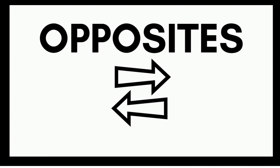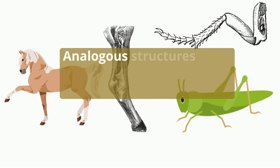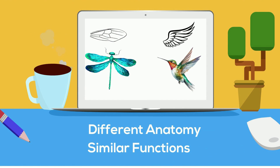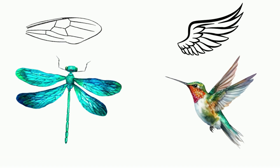Analogous structures are basically the opposite of homologous structures. These structures are anatomically different yet have a similar function. Let's take a look at two examples. First, the wing of an insect and the wing of a bird — you can clearly see they are structurally very different; however, they are both used for flight.